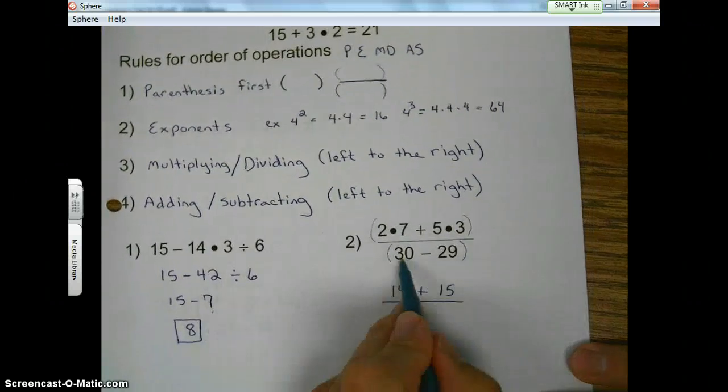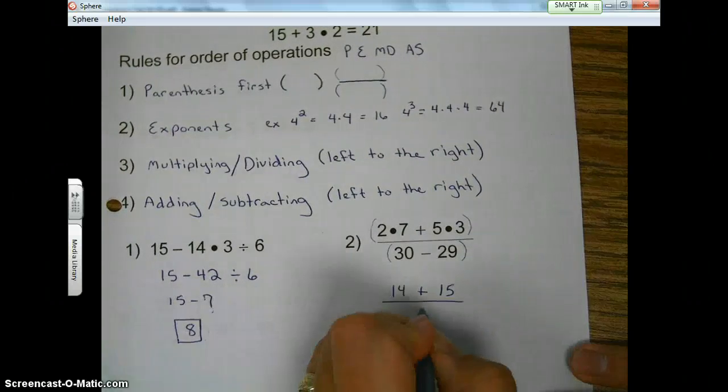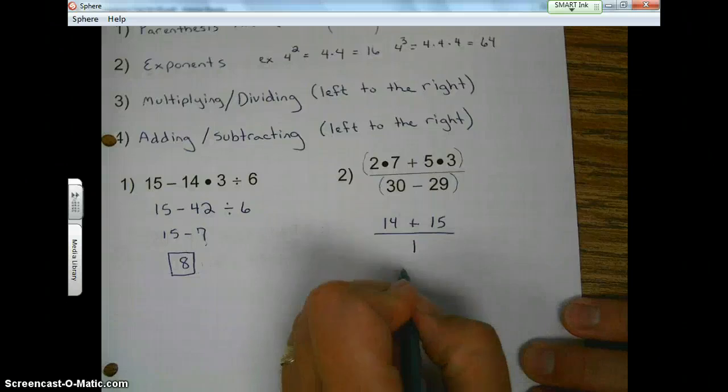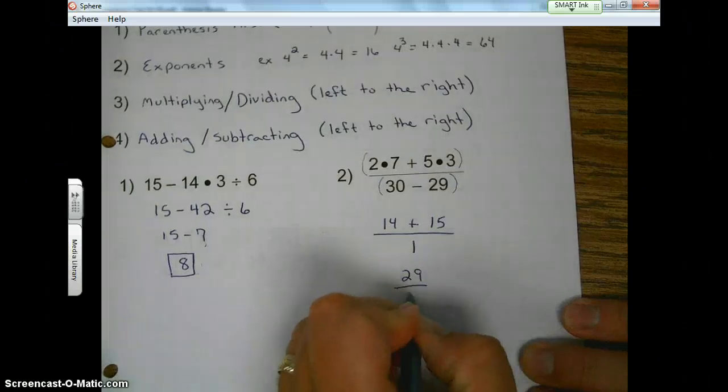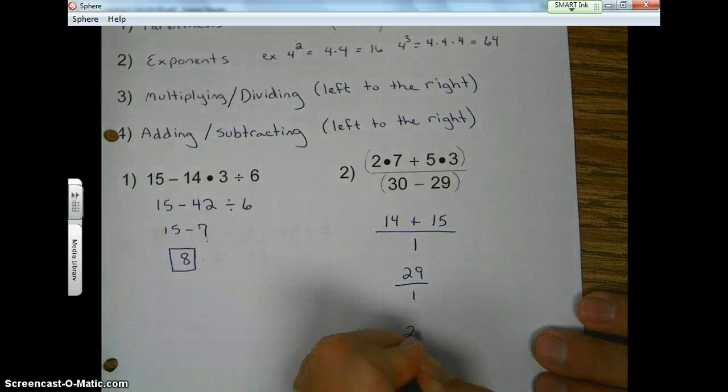Okay? And then on the bottom, we just have subtraction, 30 minus 29 is 1. Okay? Continue to move down. 14 plus 15 is 29 over 1.